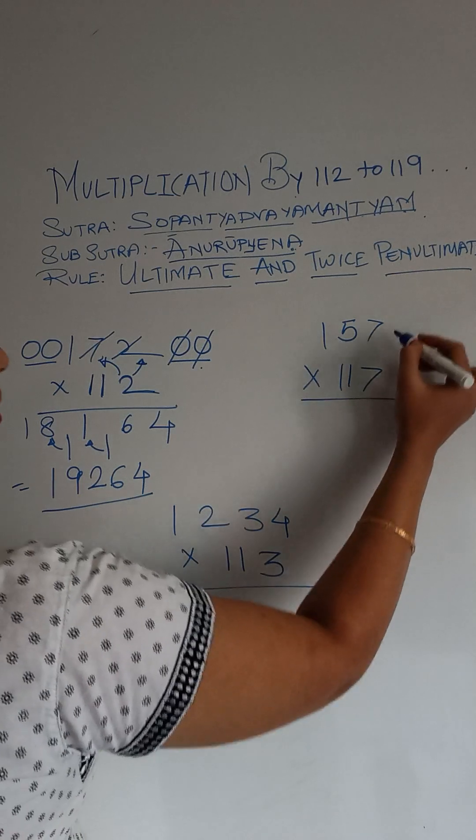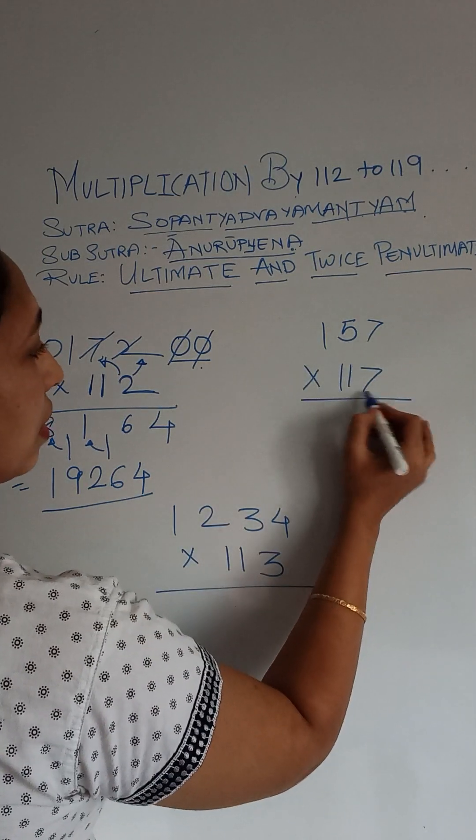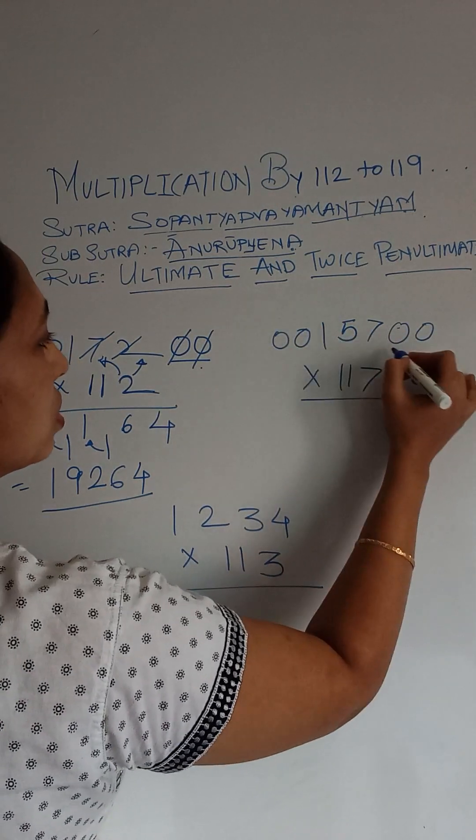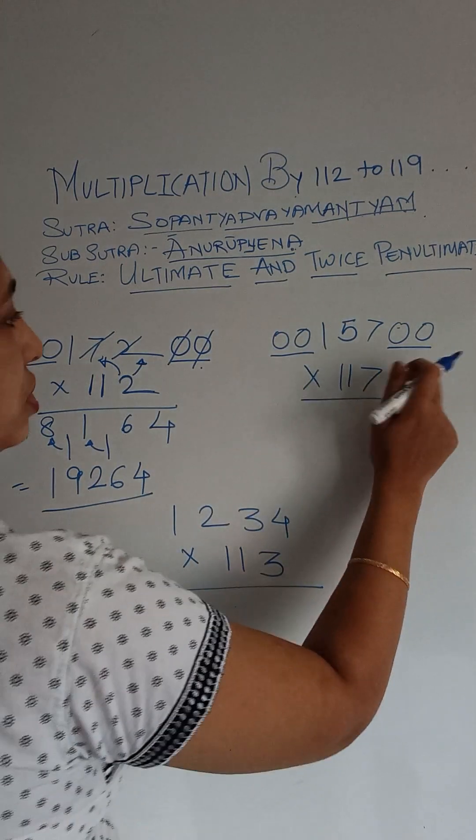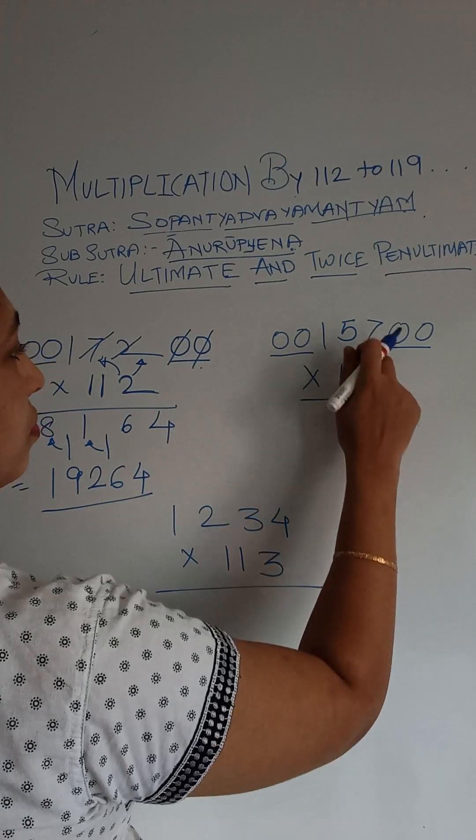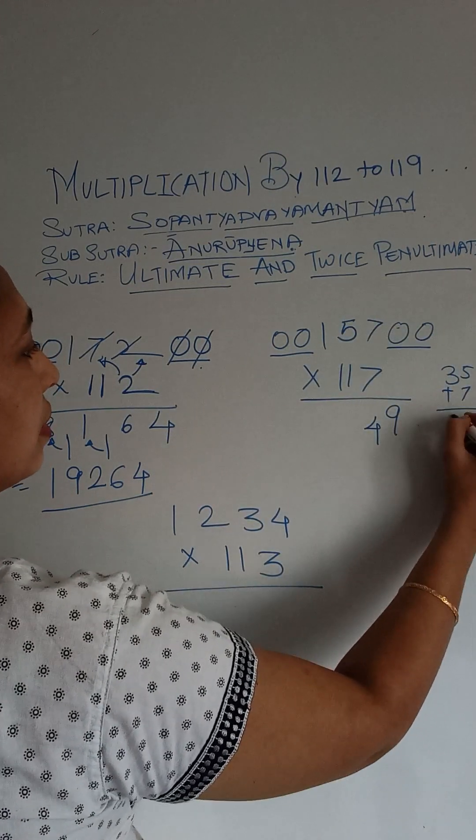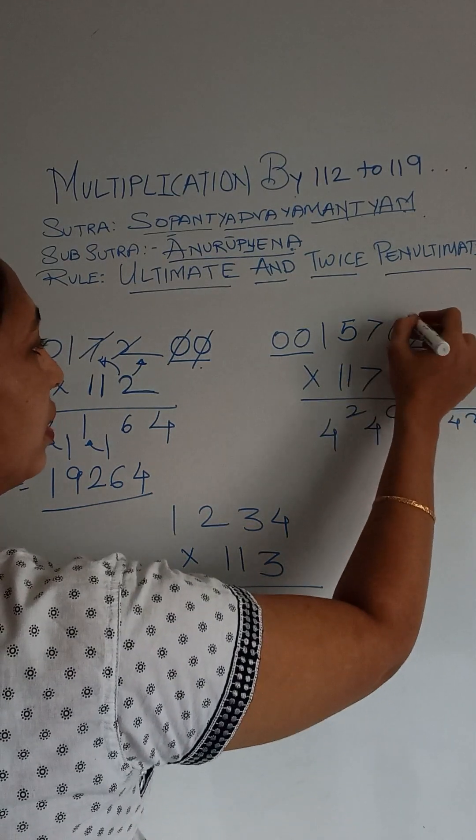Next we will see 157 into 117. So since we are going to use the sutra Anurupena, we will just try to add 2 more zeros. So we will add 3 digits. As we have got 3 digits here. Alright. 7 into 7 is 49. 7, 5 is now 35 plus 7. That is 42. Alright.